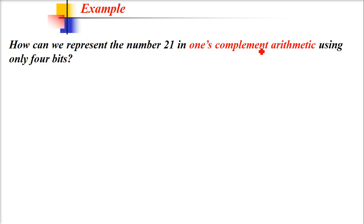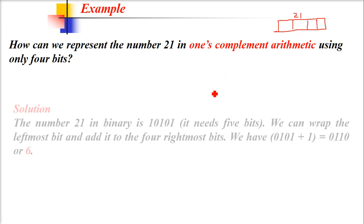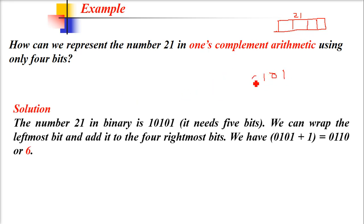How can we represent 21 in one's complement arithmetic using only 4 bits? I'm taking an example with 4 bits, which can be extended to 8 bits or 16 bits. 21 in binary is 10101—that is 1, 4, and 16, so 16 plus 4 plus 1 equals 21. But these are 5 bits, and we can only hold 4 bits. What to do with the extra bit?